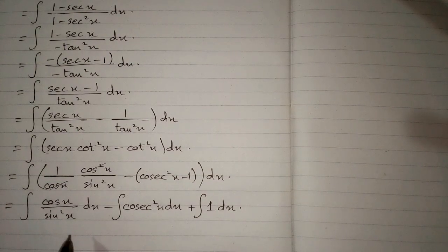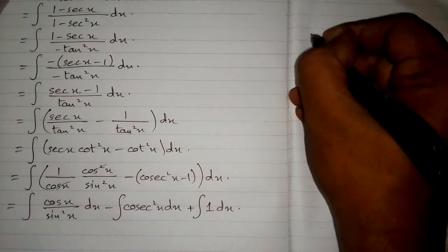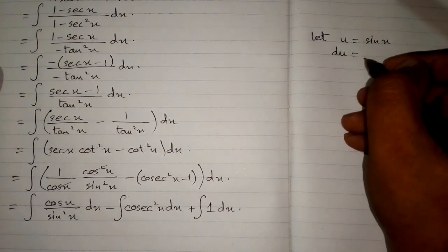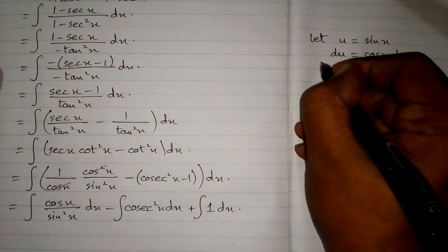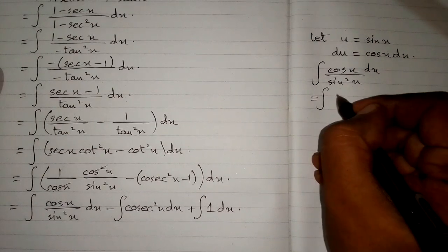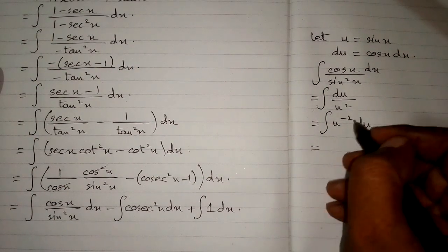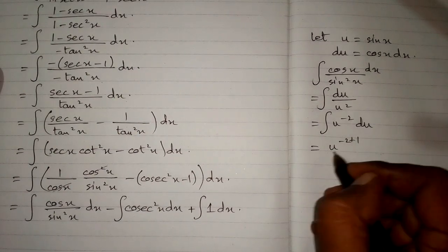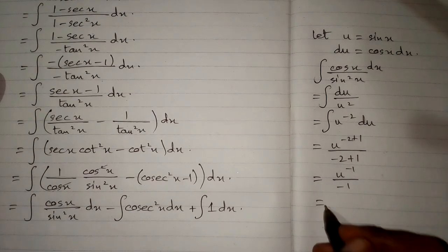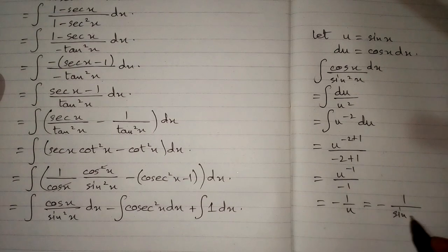For the first integral, since we have sin squared x in the denominator, let u equal sin x, so du equals cos x dx. The integral of cos x dx upon sin squared x becomes the integral of du upon u squared, or u to the power minus 2 du. Applying the power rule, we get u to the power minus 1 upon minus 1, which is minus 1 upon u. Substituting back u equals sin x gives minus 1 upon sin x.